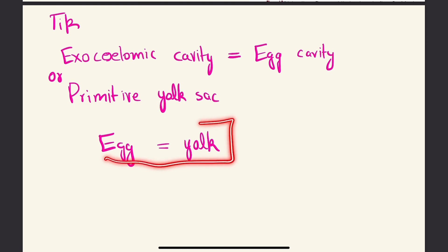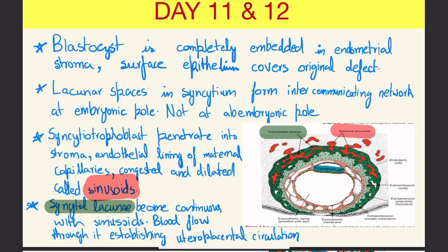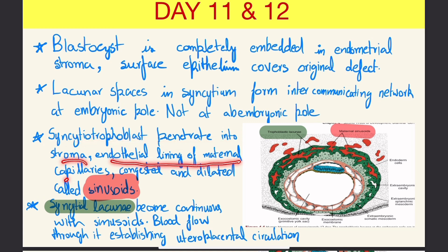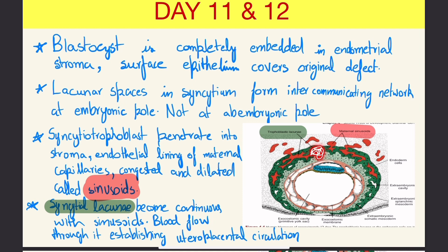At days 11 and 12, the blastocyst is completely embedded in the endometrial stroma; the surface epithelium covers the original defect by fibrin coagulation. Lacunar spaces in the syncytium form an intercommunicating network at the embryonic pole. Syncytiotrophoblast penetrates into the stroma; the endothelial lining of maternal capillaries becomes congested and dilated, forming sinusoids. The syncytial lacunae become continuous with the sinusoids, establishing uteroplacental circulation.